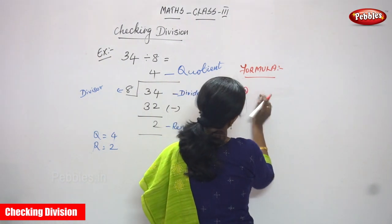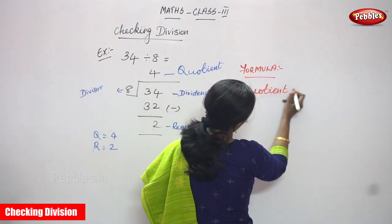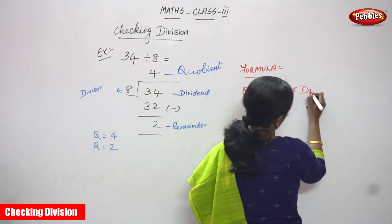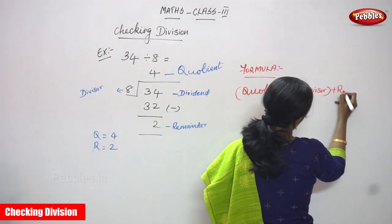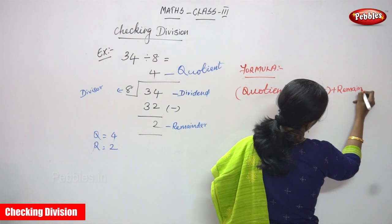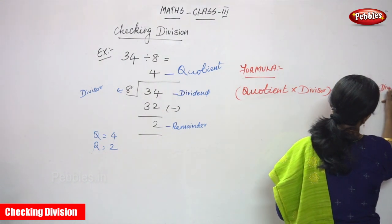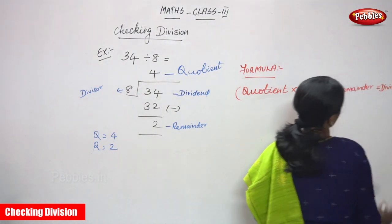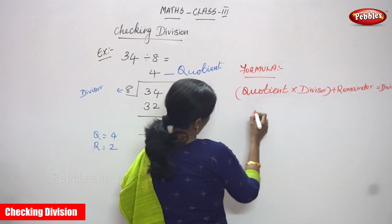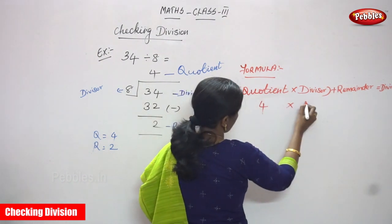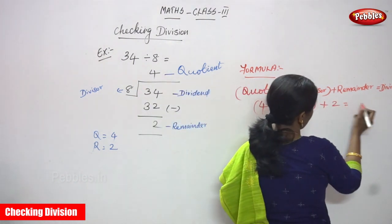The formula is: quotient into divisor, then in brackets plus remainder, equals dividend. So this is the right answer format.